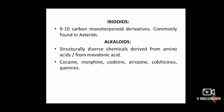Alkaloids are structurally diverse chemicals that are derived from amino acids or from mevalonic acid. Cocaine, morphine, codeine, atropine, colchicine, and quinine are some important alkaloid plant products. The plant groups where they are biosynthesized represent a vast diversity, hence they are of little systematic interest.